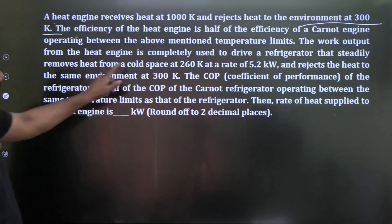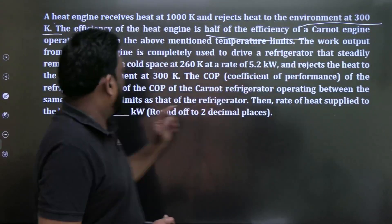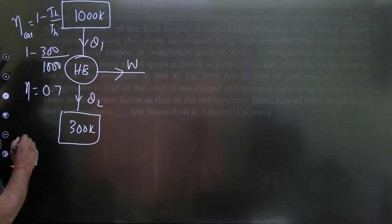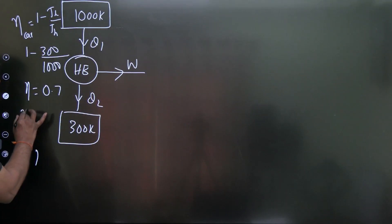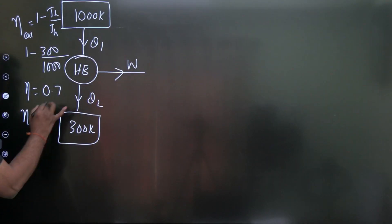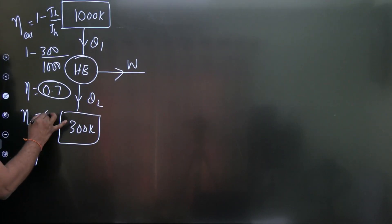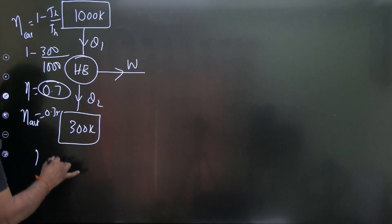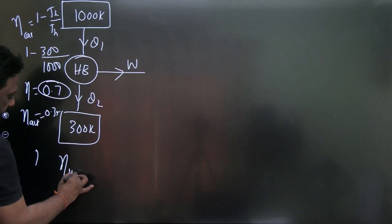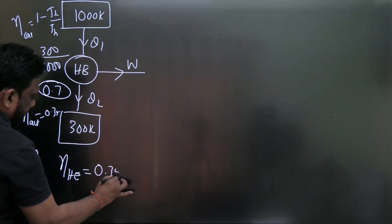The actual efficiency of the engine is half of the Carnot efficiency: η_actual = 0.7 / 2 = 0.35. So the engine operates at 35% efficiency.